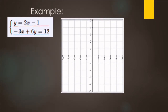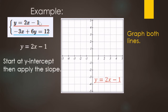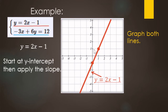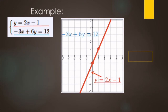Looking at this system, we'll graph both lines to find the solution. The top equation y = 2x − 1 is in slope-intercept form. The y-intercept is negative 1, and the slope is 2, so up two over one. Draw the line for all the ordered pairs that make the red equation true.